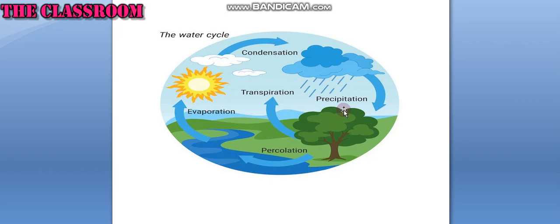Precipitation refers to all forms of water that fall from clouds and reach the Earth's surface. Some of the forms are rain, sleet, freezing rain, hail, etc.